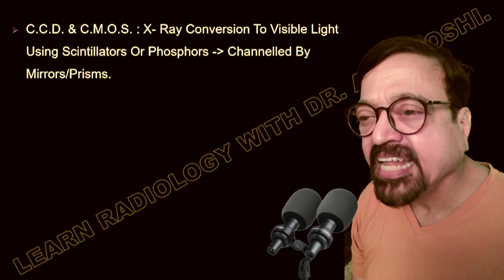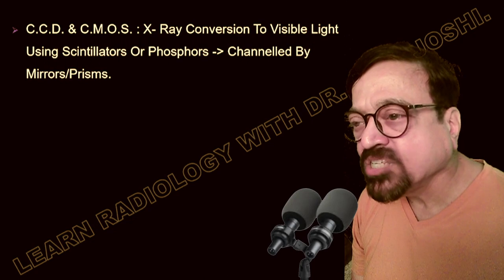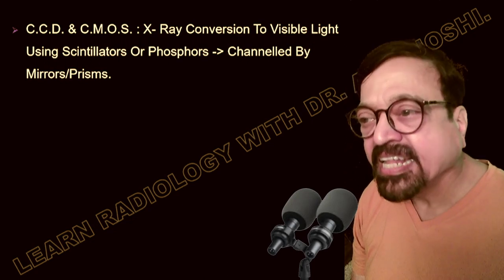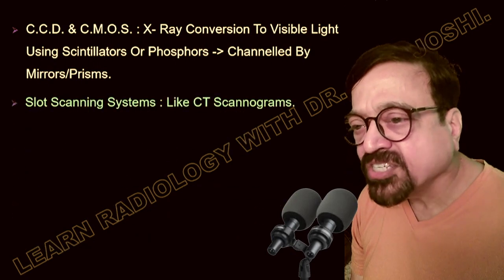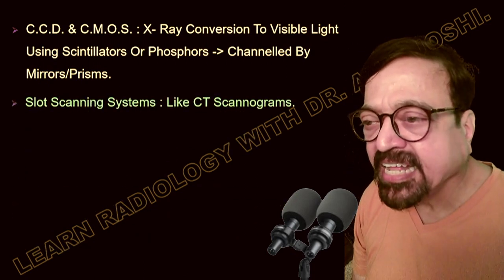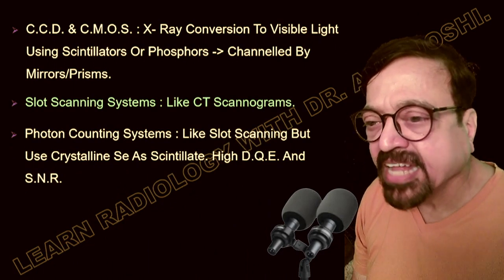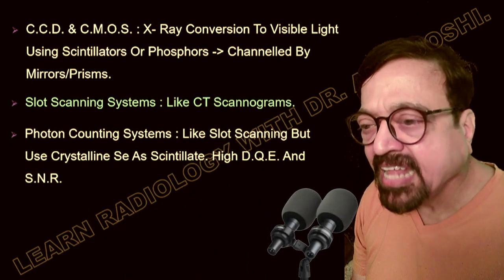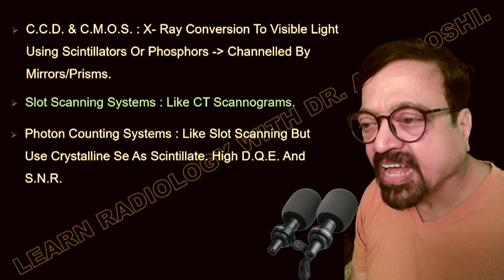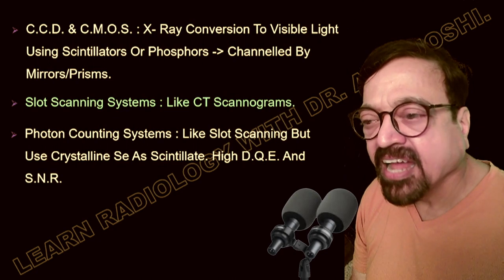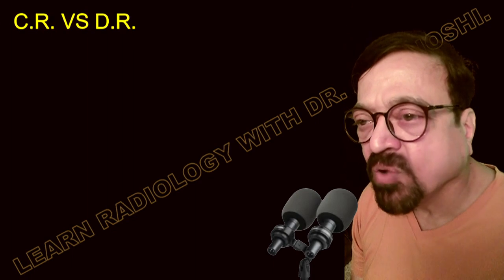For CCD and CMOS systems, x-rays are first converted to visible light using scintillators or phosphors, then channelized by mirrors or prisms. Slot-scanning systems, similar to CT scanograms, are also used. Photon-counting systems work like slot scanning but use crystalline selenium as the scintillator, providing high detective quantum efficiency (DQE) and high signal-to-noise ratio (SNR) — both important for good-quality images.